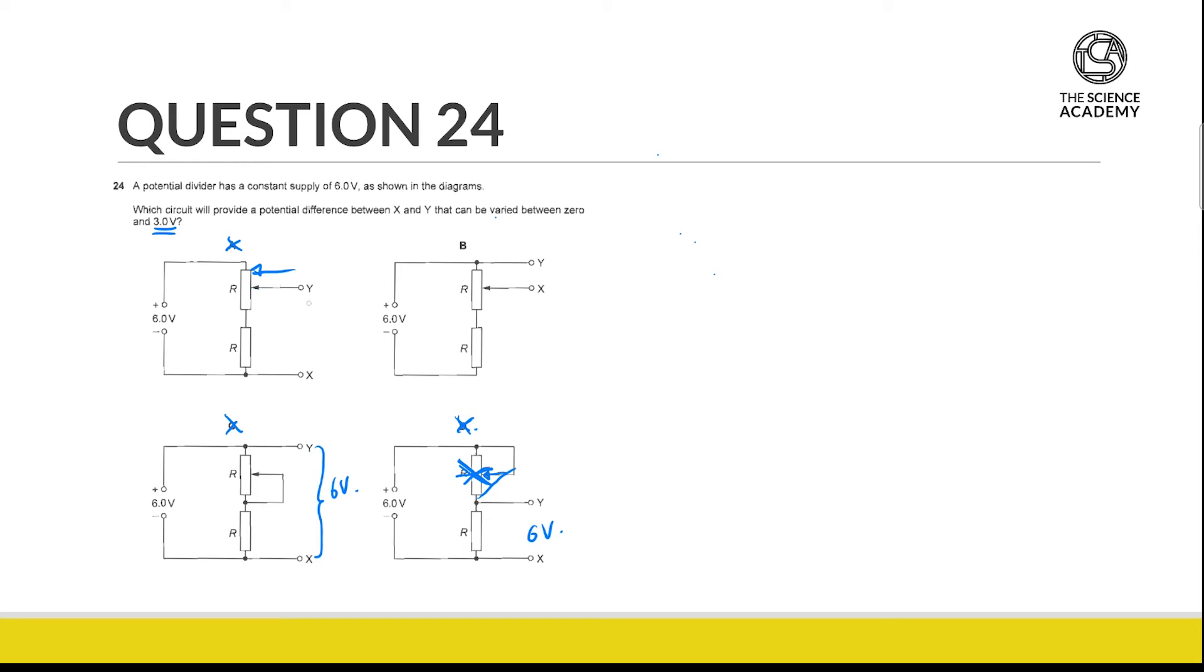So if Y is all the way at this end of R, we can see that we are measuring the potential differences of both resistors, which is going to be 6 volts as well. So immediately we can rule out A.